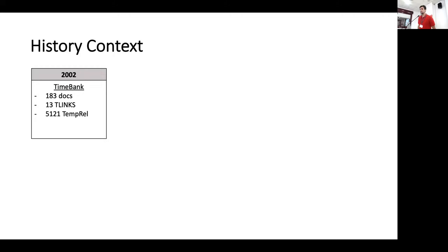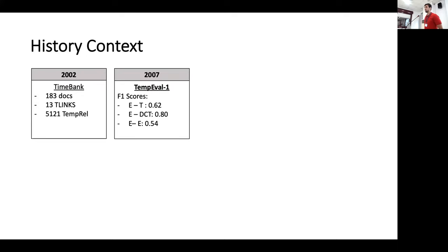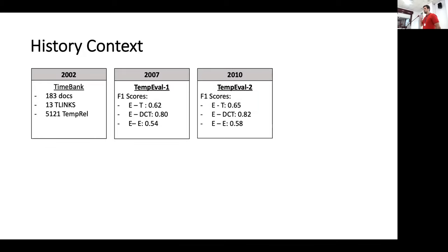So, we have this dataset. Why not make a competition out of it? And that's what was made. In 2007, there was the first competition to deploy models that correctly classify the temporal relations. The task was divided in three different categories: event-temporal expressions, events-document creation time, and event-event. And the numbers you see there are the F1 scores of the models. Event and document creation time relations were the best, but they are also the fewest. So, the models were not that good. Let's do it again. TempEval 2 — dataset was updated, a little bit more languages, but the performance of the models was more or less the same.